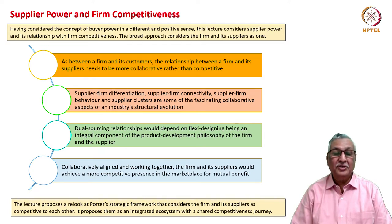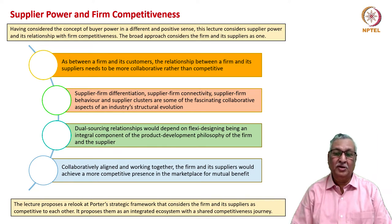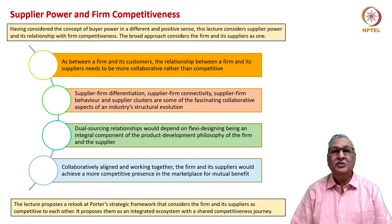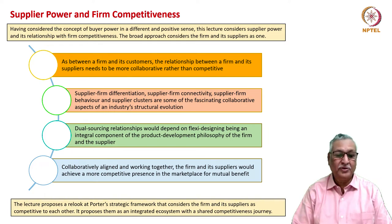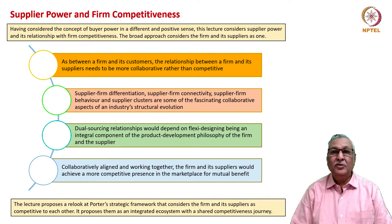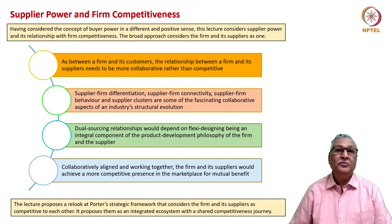Dual sourcing relationships are often heard of in supply chain jargon, but they depend on flexi-designing being an integral component of the product development philosophy of the firm and the supplier. When the firm and suppliers are collaboratively aligned together, there would be a more competitive presence for the firm as well as the suppliers in the marketplace for mutual benefit. We take a relook at Porter's strategic framework relating to supplier-firm and firm competitiveness and examine how suppliers and the firm can develop a shared agenda for competitive behavior and competitive outcomes.